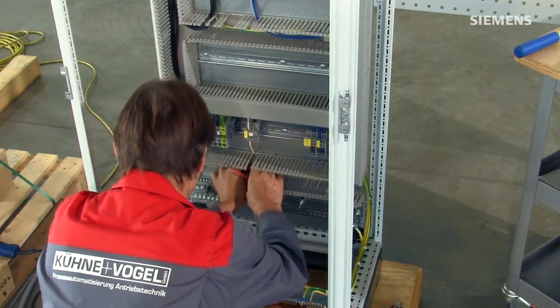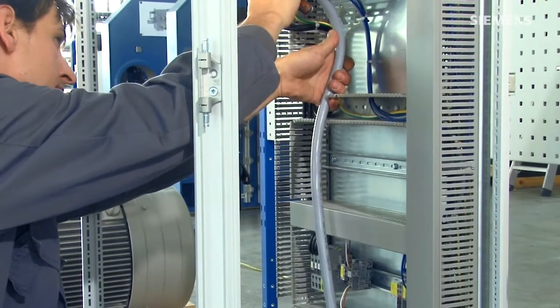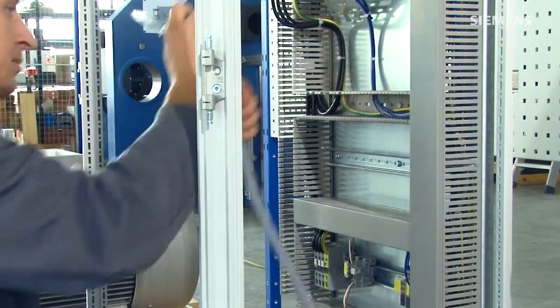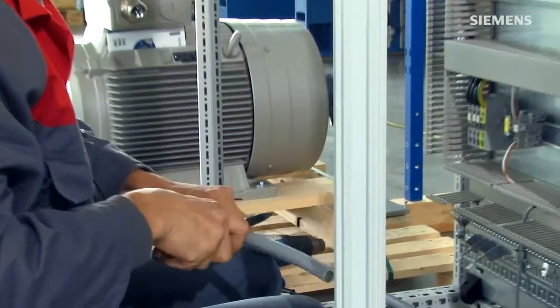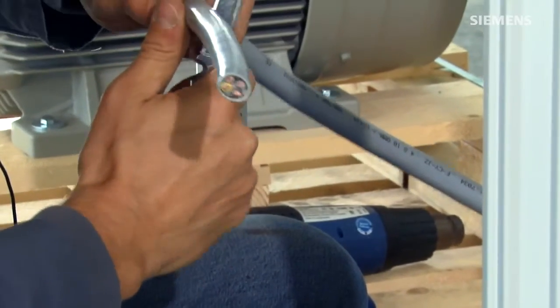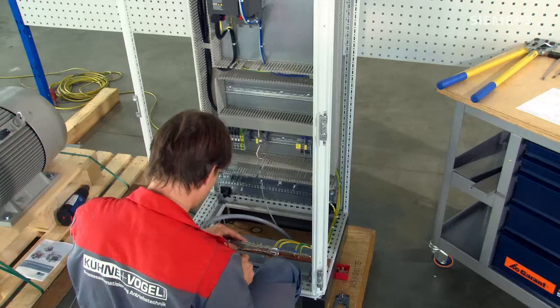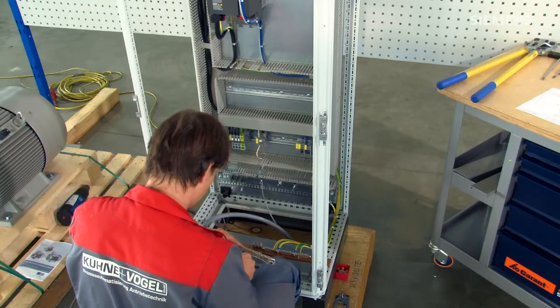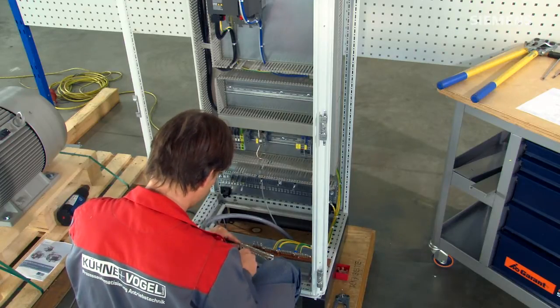Now let's move on to the motor cable. First take a measurement, then strip the cable and cut away the shield, leaving around 5 cm in place.